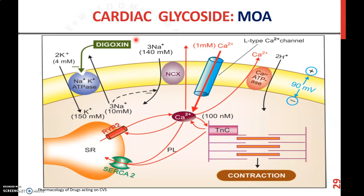In summary, digoxin binds with the Na+/K+ ATPase enzyme — this enzyme is responsible for transporting Na+ to the outside and K+ to the inside. By inhibiting this enzyme, sodium ions accumulate in the intracellular space. This activates L-type calcium channels, which in turn activate the sarcoplasmic reticulum. Through ryanodine receptors, calcium ions are released, bind with troponin C, and produce contraction.